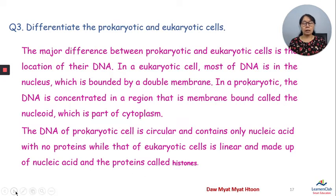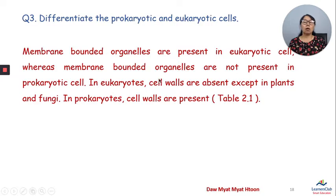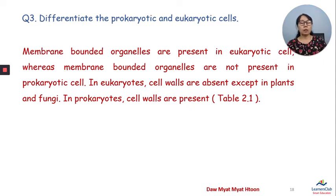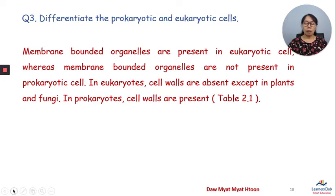Membrane-bounded organelles are present in eukaryotic cells, but membrane-bounded organelles are not present in prokaryotic cells. In prokaryotes, the cell wall is absent except in plants and fungi; in eukaryotes, the cell wall is present.